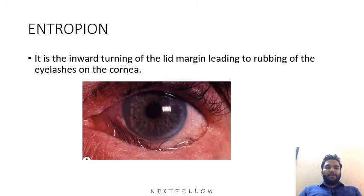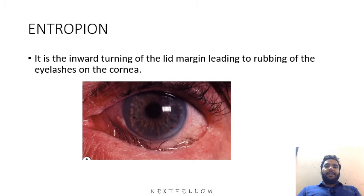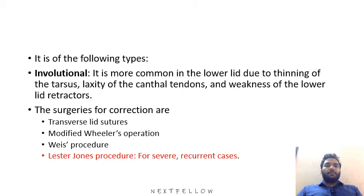The next topic is entropion, which is the inward turning of the eyelid margin leading to rubbing of the eyelashes on the cornea. The types are: involutional, which is more common in the lower lid due to thinning of the tarsus, laxity of the canthal tendons, and weakness of the lower lid retractors. Surgeries for correction include transverse lid sutures.